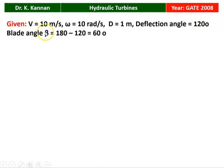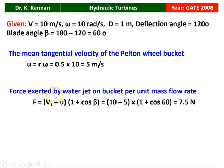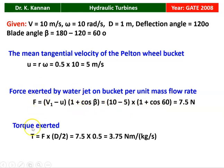For the solution: jet velocity V = 10 m/s, bucket angular speed ω = 10 rad/s, diameter D = 1 m, deflection angle = 120°, so blade angle β = 180 − 120 = 60°. Tangential bucket speed U = R·ω = 0.5 × 10 = 5 m/s. Force per unit mass flow rate F = (V − U)(1 + cos β) = (10 − 5)(1 + cos 60°) = 7.5 N. Torque T = F × D/2 = 7.5 × 0.5 = 3.75 N·m per kg/s.